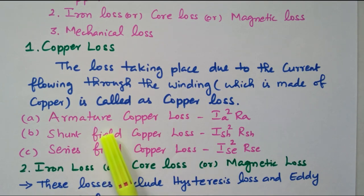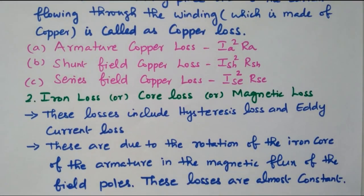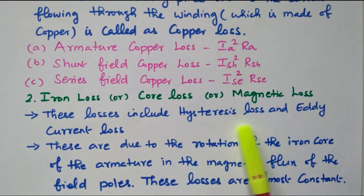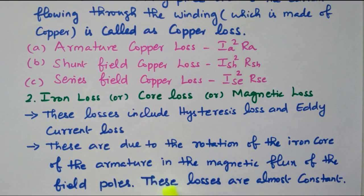Field may be series field or shunt field. Then iron loss, core loss, or magnetic loss. The losses include the hysteresis loss and eddy current loss. These losses are due to the rotation of the iron core, because of that it is called iron loss or core loss. Iron core of the armature rotates in the magnetic flux of the field poles. These losses are almost constant.